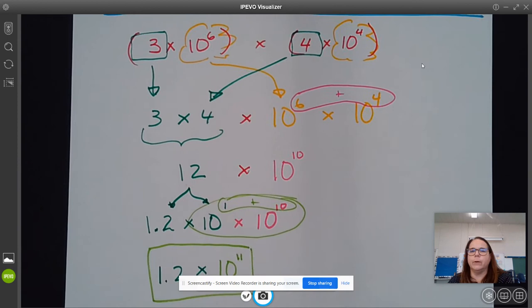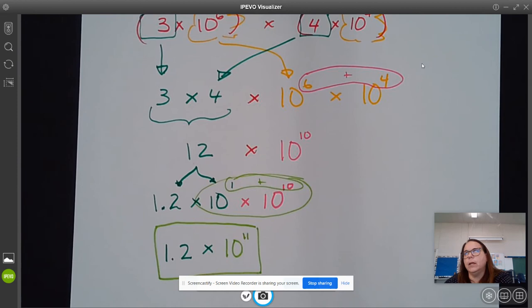So technically, yes, could you take these two numbers and multiply them? But what you're going to end up with is a lot of zeros, and it's going to be kind of hard to manage. So this is the easiest way to do that.